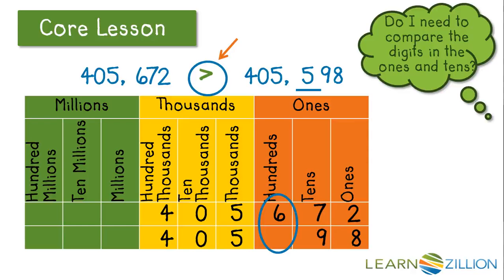There are many numbers that could make this number sentence true, as long as it's less than 6. Let's try a 5. 405,672 is greater than 405,598. Some other numbers that would also work would be a 4, a 3, 2, 1, or 0.